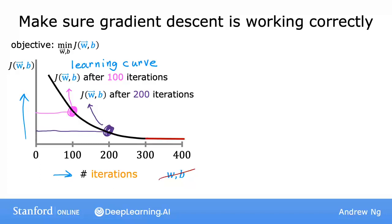If gradient descent is working properly, then the cost j should decrease after every single iteration. If j ever increases after one iteration, that means either alpha is chosen poorly, and it usually means alpha is too large, or there could be a bug in the code.